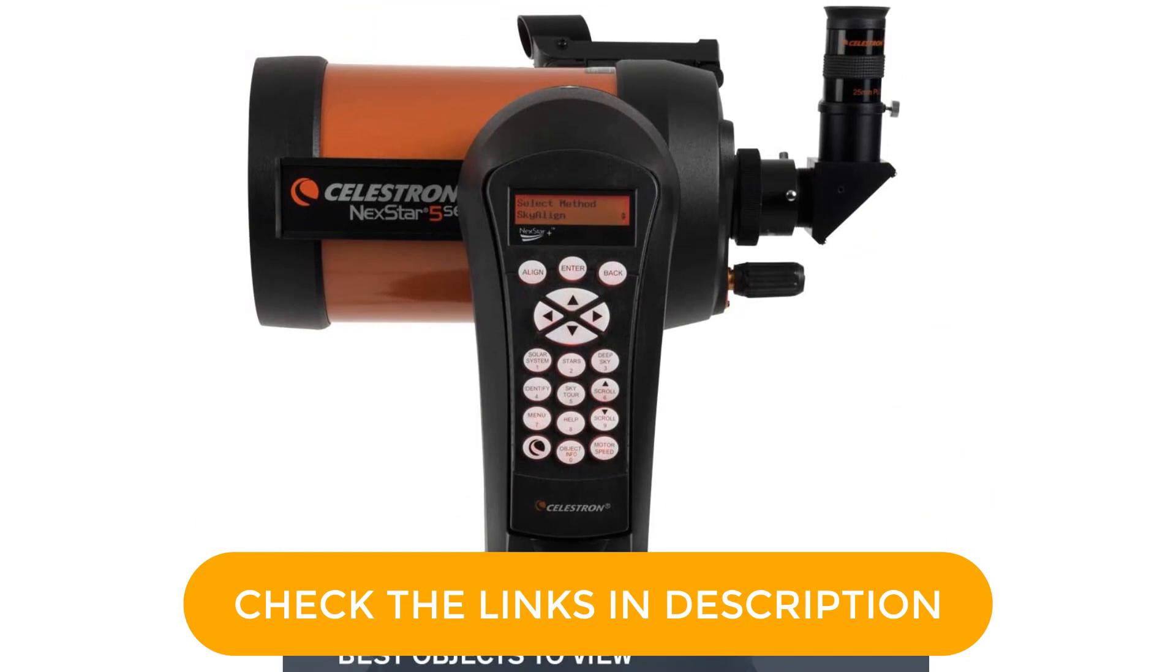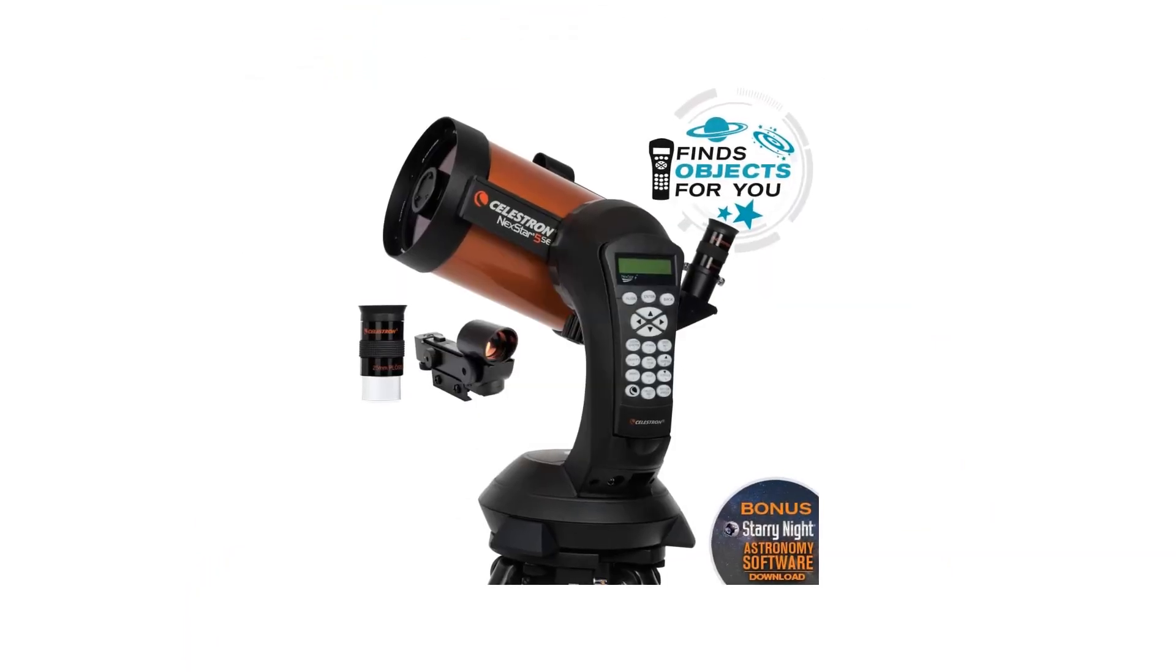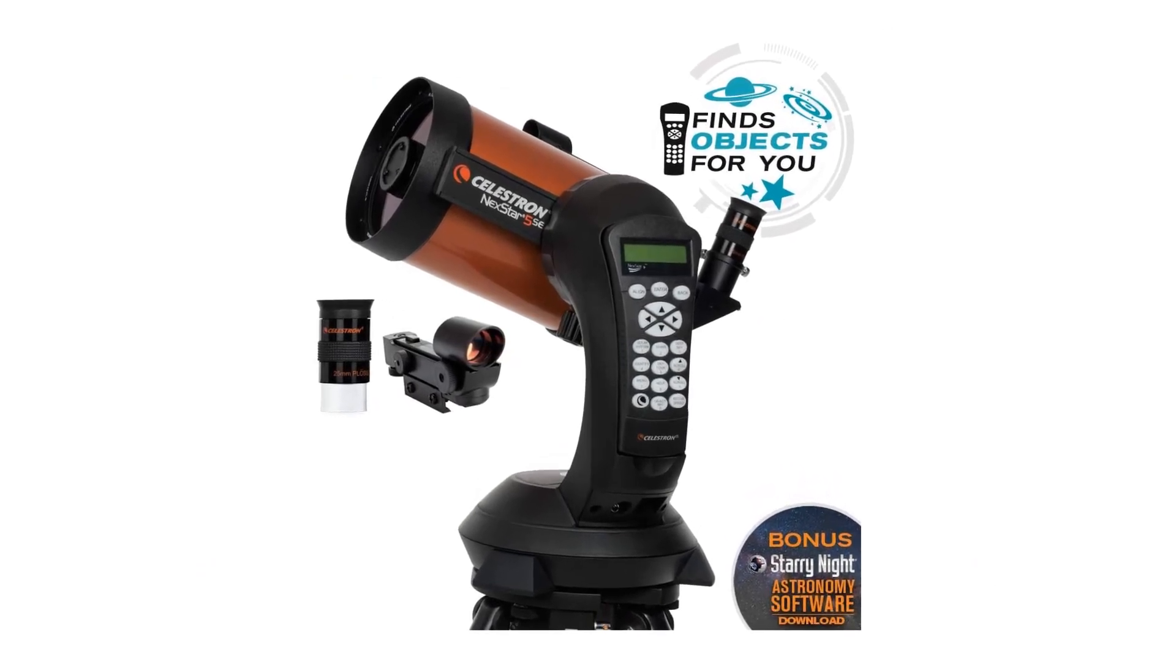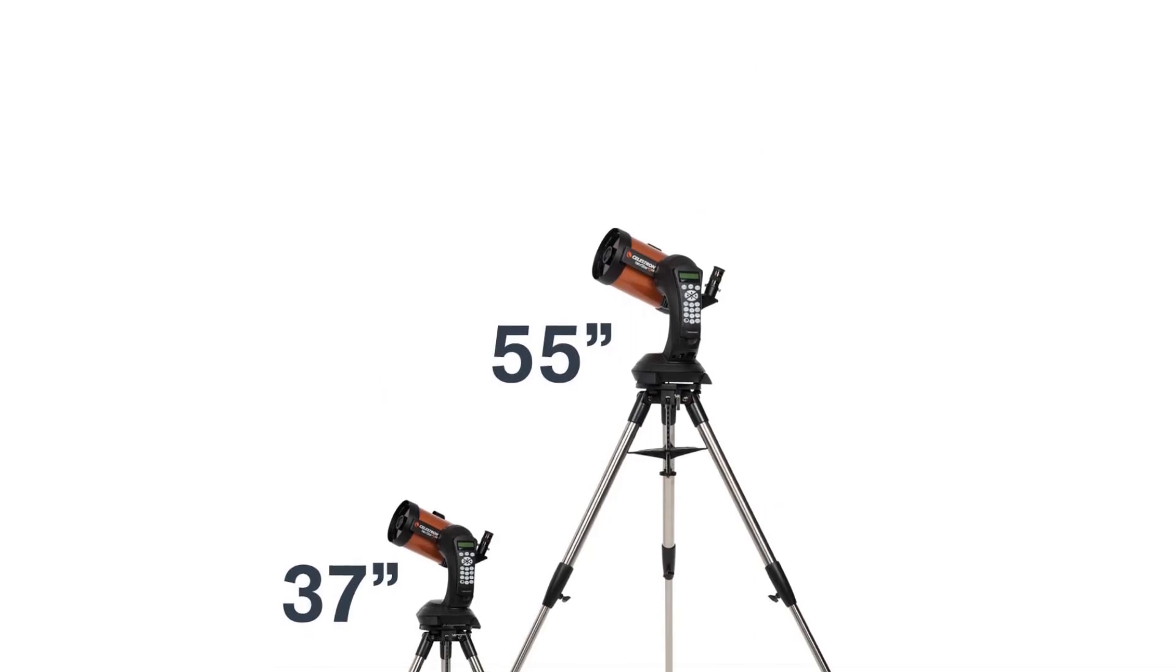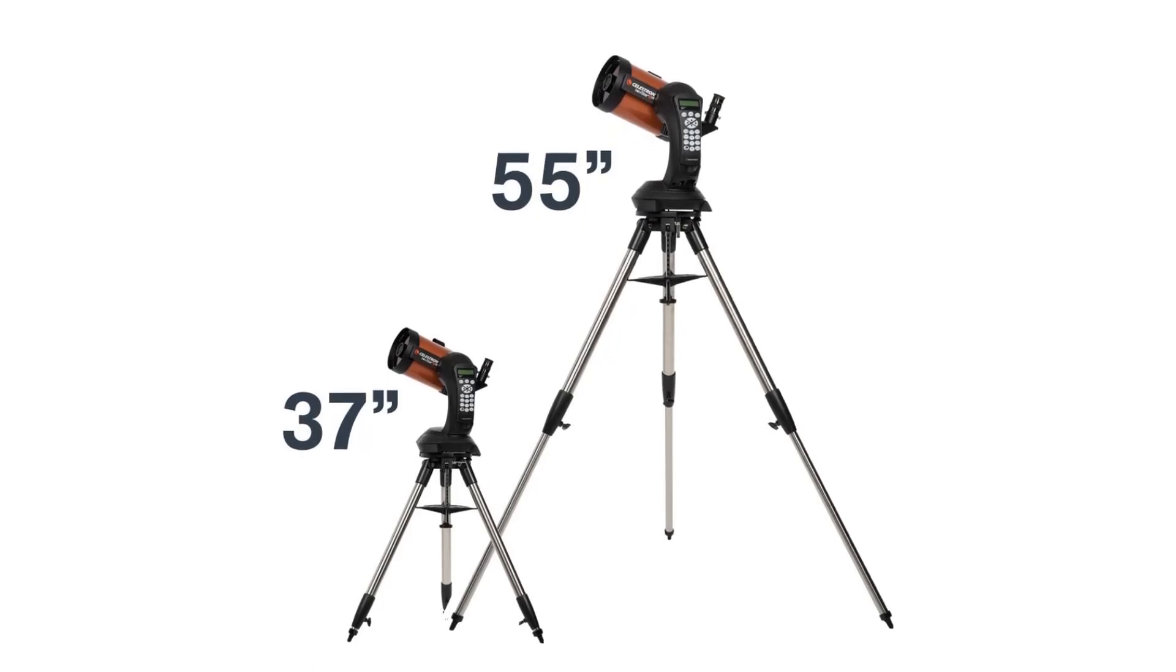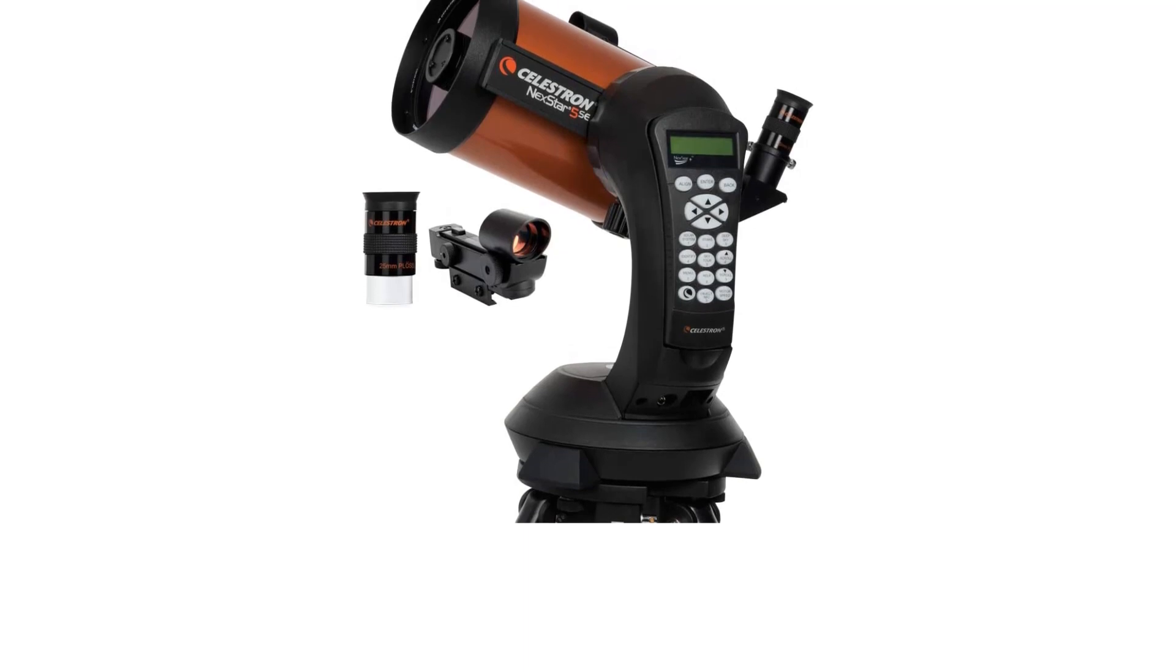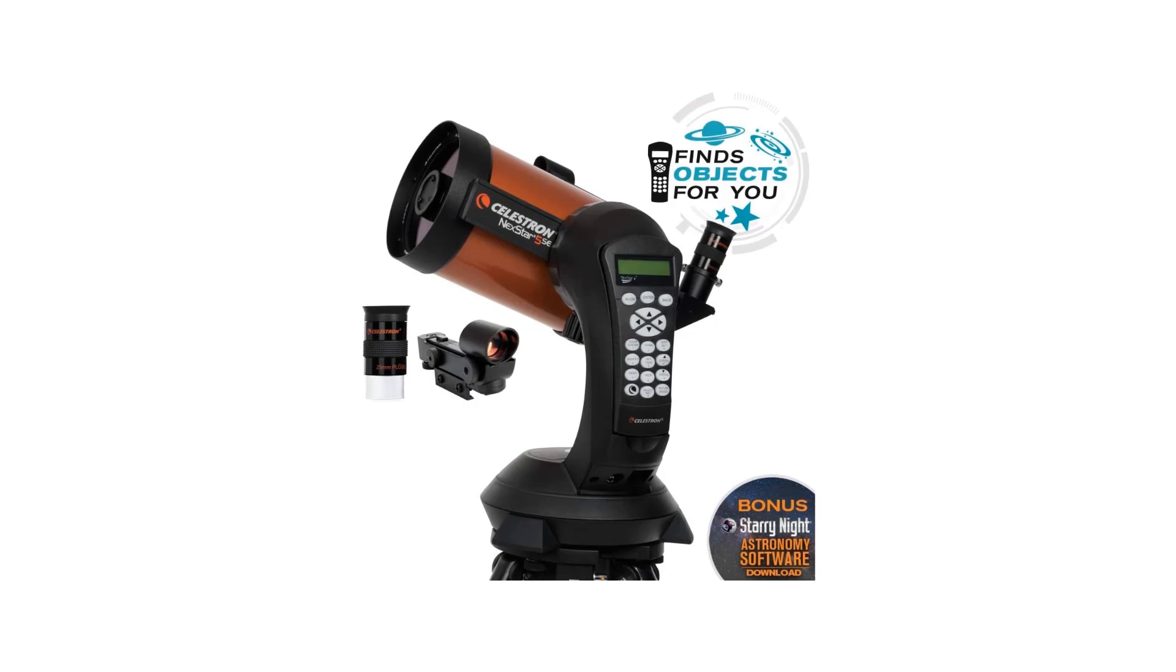Celestron's proprietary Starbrite XLT multi-coding system makes the images and your viewing extremely bright since light transmission sees an increase in the optical path. The telescope also uses anti-reflection multi-coded lenses, highly reflective multi-coded mirrors, and crown optical glass elements to give you the best picture out there. The Celestron Nexstar 5SE also has a variety of other features that make it a complete system, great for deep space viewing.